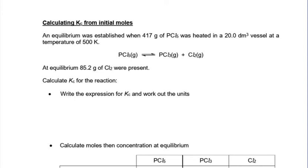Let's pull everything together now and have a go at a typical exam question. An equilibrium was established when 417 grams of PCl5 was heated in a 20 dm³ vessel at a temperature of 500K. They've only given you the temperature because Kc is affected by temperature. It's nothing to do with the question. You're not going to need it.